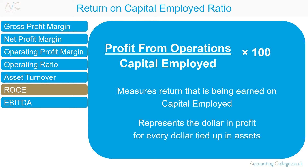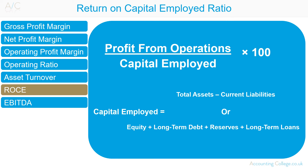Return on capital employed, also known as return on investment, is profit from operations divided by capital employed. Return on capital employed measures the return that is being earned on the capital employed by an organisation. It represents the dollar in profit for every dollar tied up in assets, and tells you if you invest in a business what sort of money you would get back. Capital employed equals total assets less current liabilities, or total equity plus long-term debt — which is share capital plus reserves plus long-term loans. When deciding what figure to use, consider what is important to compare.